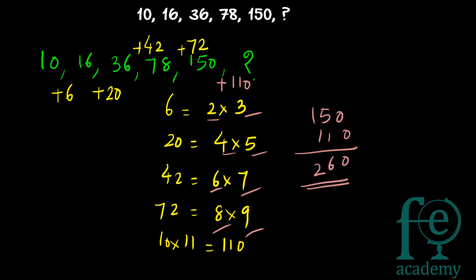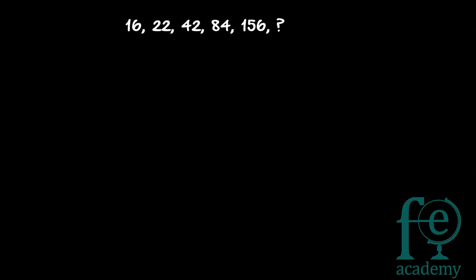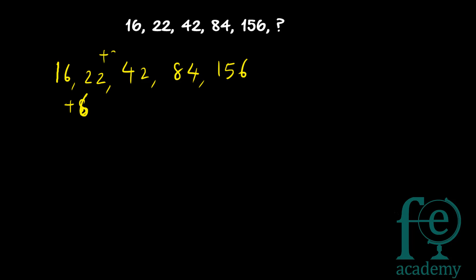Now the second question: find out the missing number. The series is 16, 22, 42, 84, 156. Here also, find the difference between consecutive terms: 16 plus 6 equals 22, 22 plus 20 equals 42, 42 plus 42 equals 84, and 84 plus 72 equals 156. The same differences appear: 6, 20, 42, 72.